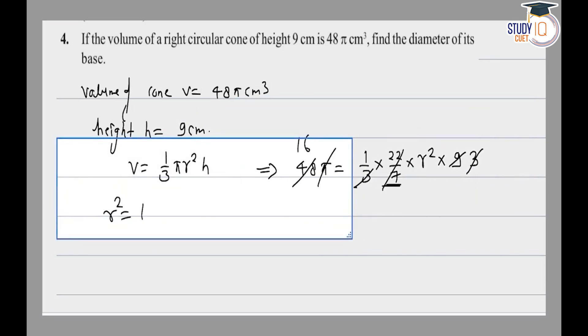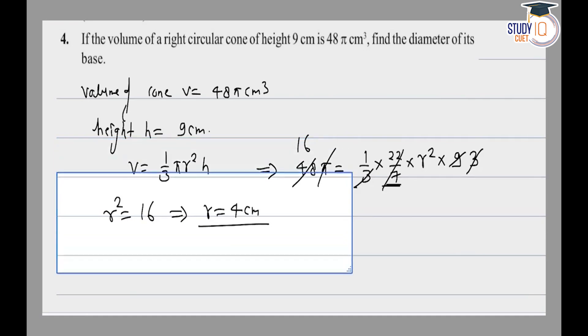16. That means r equals 4 centimeter. So we get the radius as 4 cm.